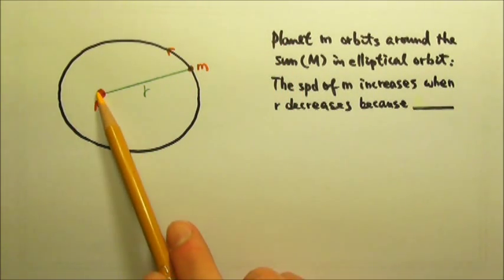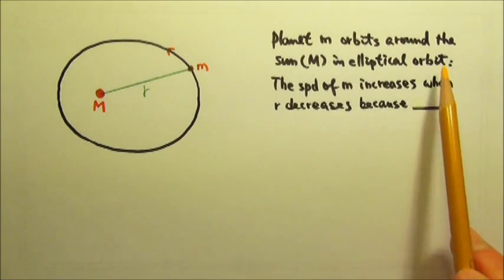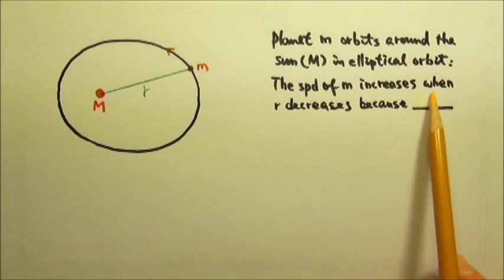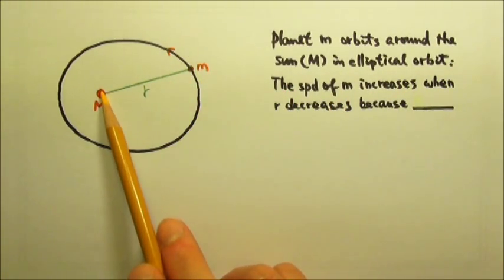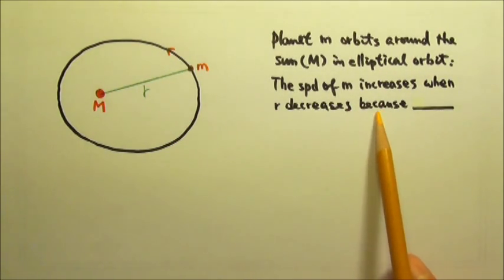A planet orbits around the sun in an elliptical orbit. The speed of the planet increases when the distance between the planet and the sun decreases because